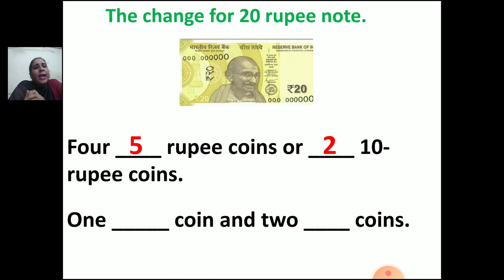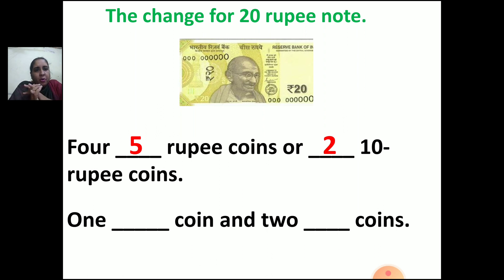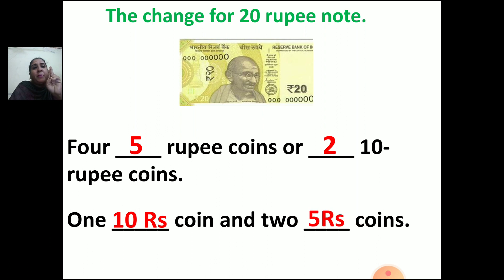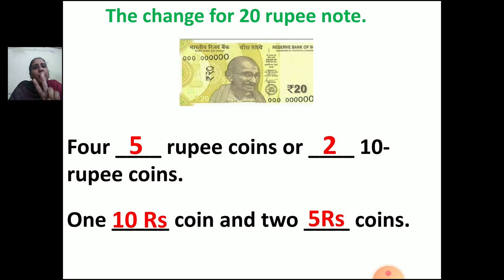Now with 3 coins to make 20 rupees: take 1 ten-rupee coin and 2 five-rupee coins. Five plus 5 is 10, and 10 plus 10 is 20. So 1 ten-rupee coin and 2 five-rupee coins make 20 rupees.